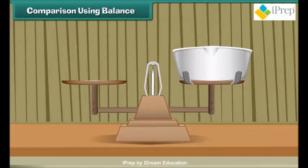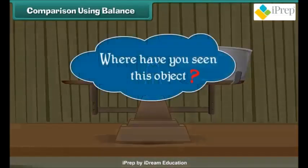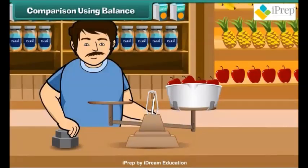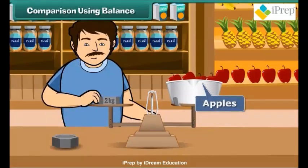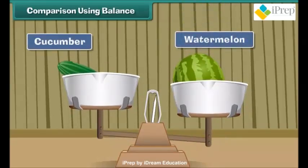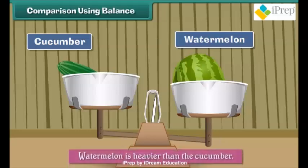Look at this picture. Where have you seen this object? Yes, in shops — it is called a balance, and it is used to measure weights. An apple seller weighs apples by placing the apples on one side and the weights on the other side of the balance. The balance can also be used to compare weights. Place a cucumber on one side and a watermelon on the other side. The side that has the watermelon goes down, which means the watermelon is heavier than the cucumber.